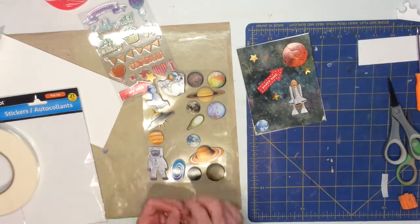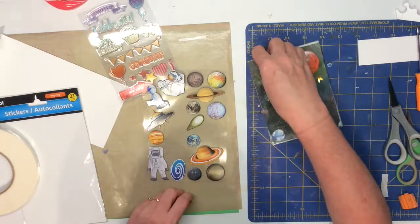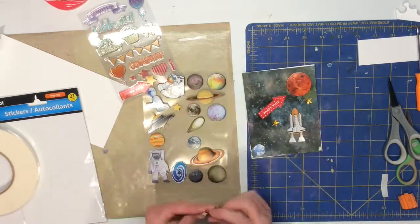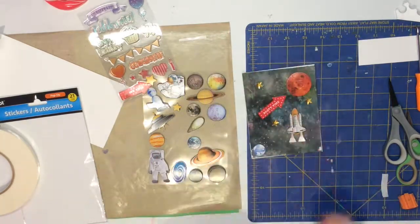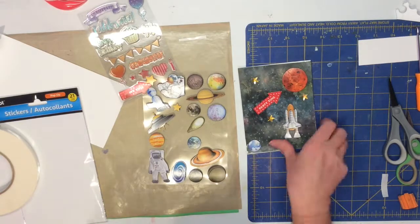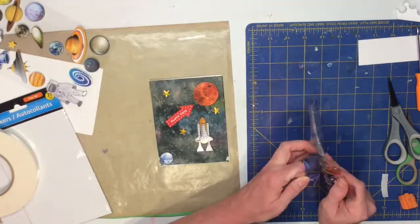So I'm putting those rhinestones down around on the galaxy, hiding a few of the spots I don't like as much, but also giving it a little bit of bling, a little bit of fun.